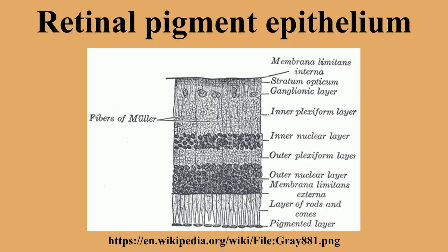Anatomy. The RPE is composed of a single layer of hexagonal cells that are densely packed with pigment granules. At the ora serrata, the RPE continues as a membrane passing over the ciliary body and continuing as the back surface of the iris, generating the fibers of the dilator.